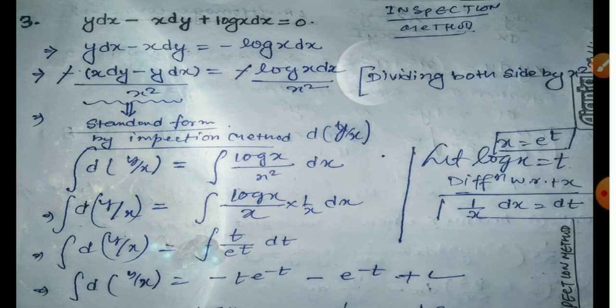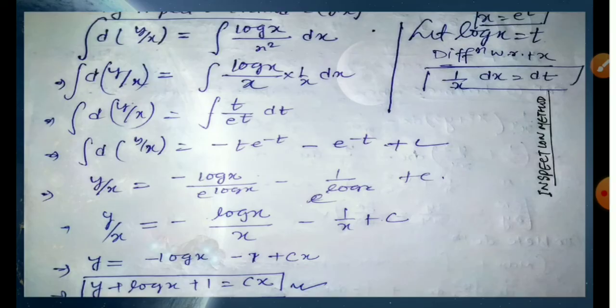Let t = y/x. Substitute on both sides. Substituting gives dt. We substitute t and if we do integration using the u·v formula, it becomes manageable. So the answer becomes: y/x = minus log x divided by e^(log x) minus 1 divided by e^(log x) plus C. Since e^(log x) = x, we write x, and finally multiplying through by x gives: y + log x + 1 = cx.